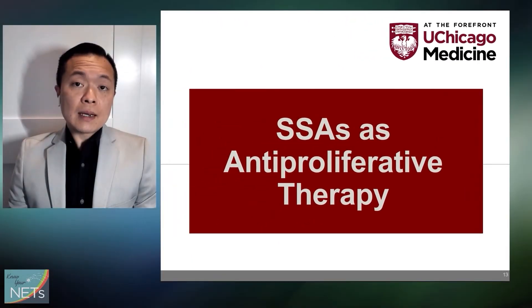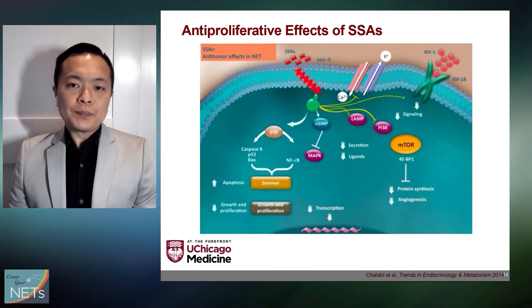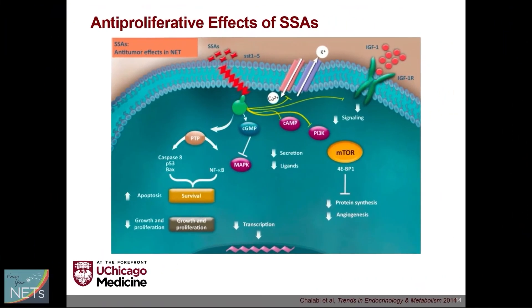Now we'll look at some of the data that establish SSAs as anti-proliferative therapies — looking at their role in slowing down and stopping tumor growth. SSAs bind to the somatostatin receptors on the surface of neuroendocrine tumor cells, and upon this binding, downstream signaling pathways within the cells get regulated. This leads to both halting of the cell cycle, but can also lead to apoptosis, which triggers tumor cell death.